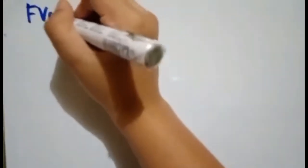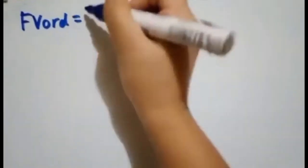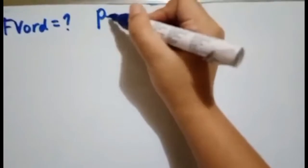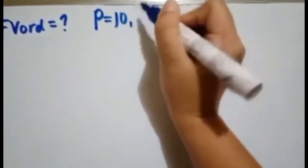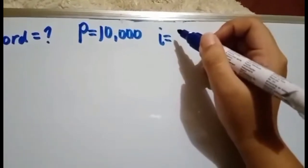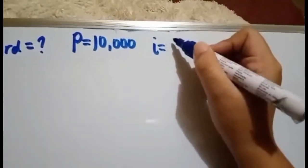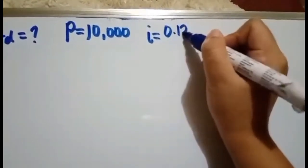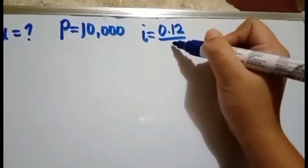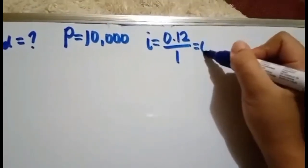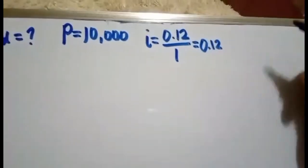It is given from the example that the future value of ordinary annuity is unknown. The annuity payment here is 10,000 pesos. Your periodic interest rate here is 12% or 0.12 compounded annually.